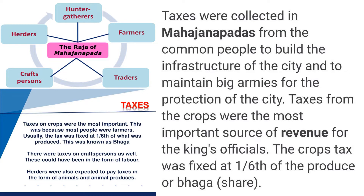Point number one: definitely the farmers, because crop activities were the most important sources of revenue. So taxes were collected from agricultural productions as one by sixth of the produce — the Bhaga or the Bali.